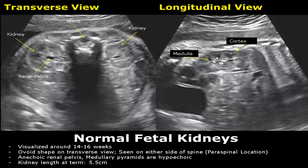You can also see it in the longitudinal view. This outer layer is the cortex. Fetal kidneys can measure up to 5.5 cm at term.